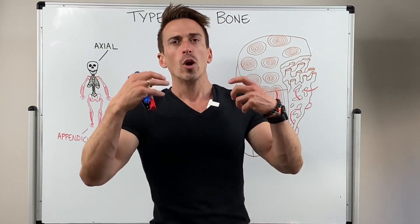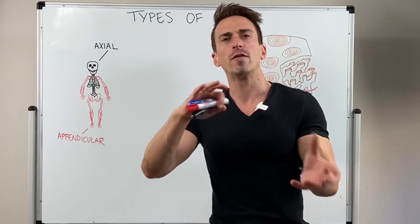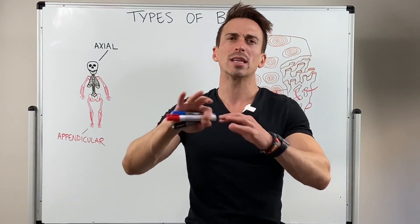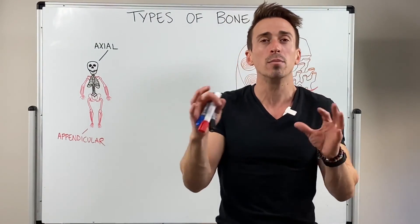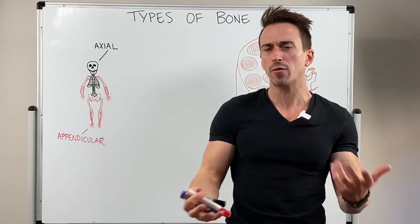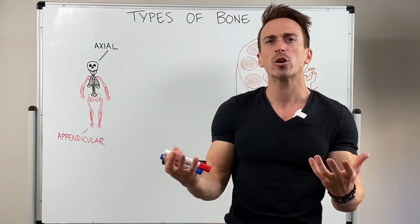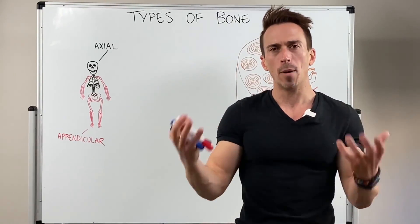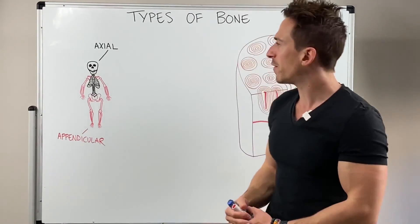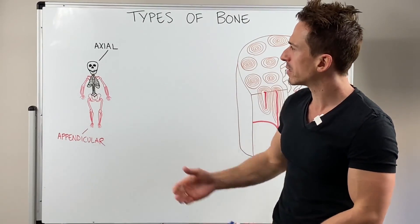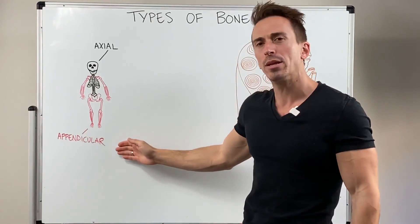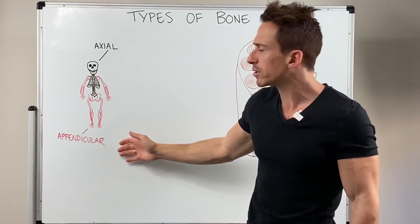When we look at the skeletal system, you can divide it and categorize the bones in a number of different ways. The first way is dividing the skeletal system into what we call the axial skeleton and the appendicular skeleton.